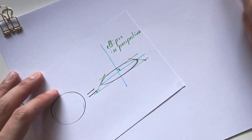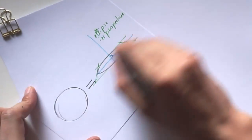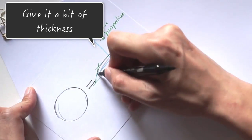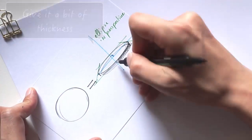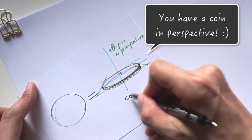This is the ellipse in perspective right here. Here's the trick: you just need to add a bit of thickness to that ellipse. Draw an ellipse a bit below, then add some hatching for the side, and like magic, you have a coin in perspective. Simple, right?